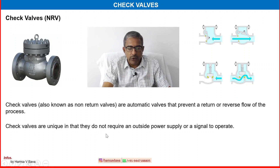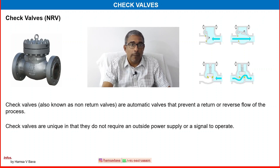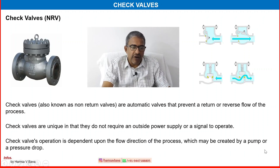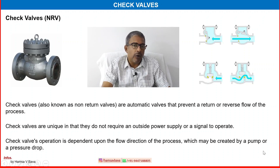Check valves are unique in that they do not require an outside power supply or signal. It is an automatic valve — there is no handle, no operation element, and it is not receiving a signal from outside. It is automatically working; the mechanism is inside itself. Check valve operation is dependent upon the flow direction of the process — that is very important — which may be created by a pump or pressure drop.